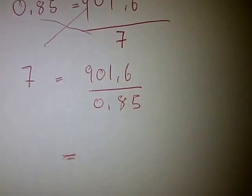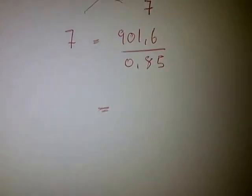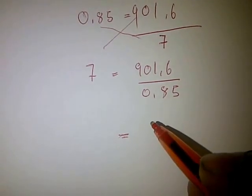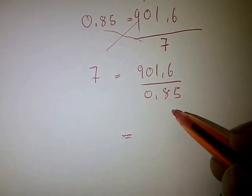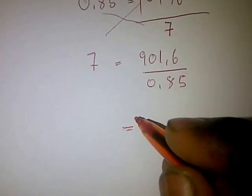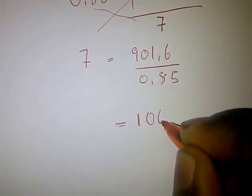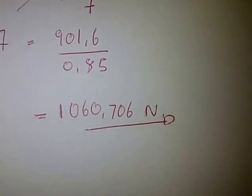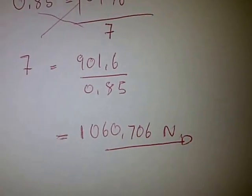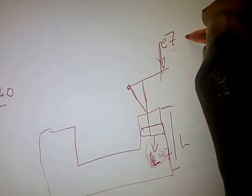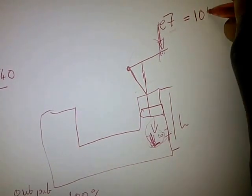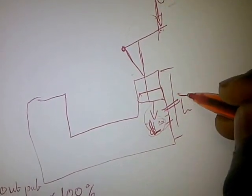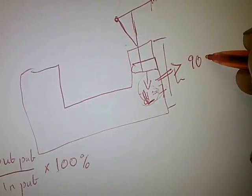The final answer for the lever force is 1060.76 Newtons. This is the force we must apply on the lever system in order to obtain a force of 901.6 Newtons on the plunger.